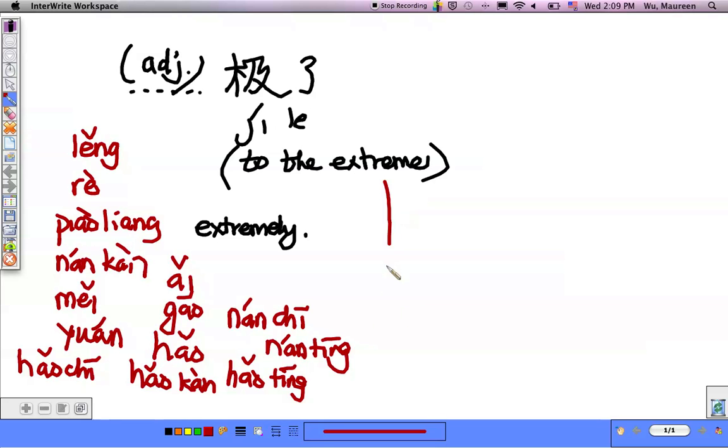So let's come up with some example sentences, and we'll put them over here. Some example sentences, I might want to say, Ava is extremely pretty. Ava is extremely pretty. You just say, Ava. We're gonna put the adjective in, right here.